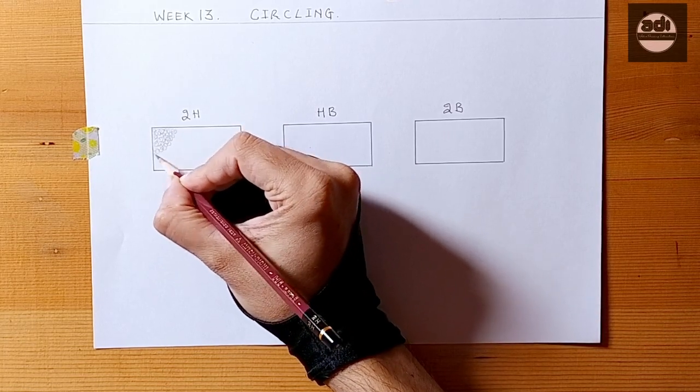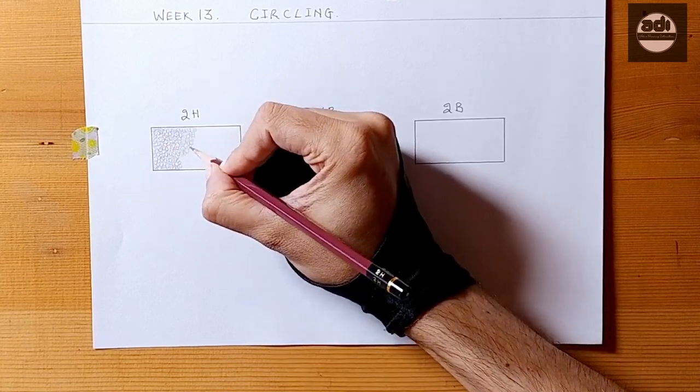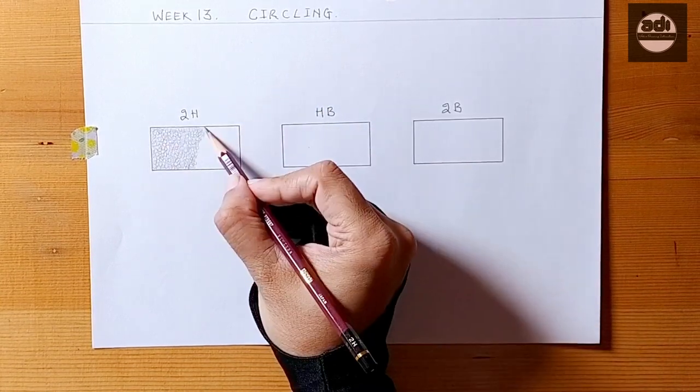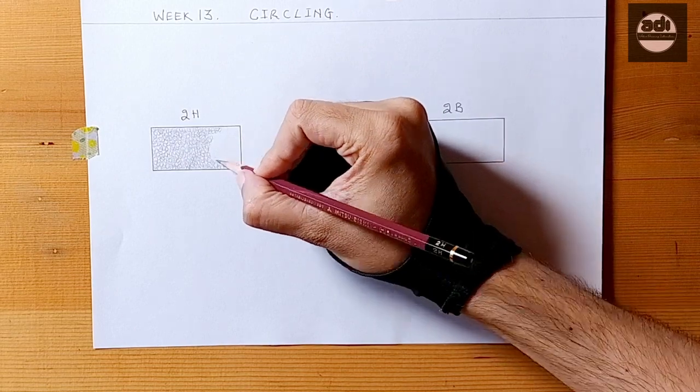For your assignment, you will shade one rectangle every day and shade it using the circling technique. You want to get a rectangle with even tone.